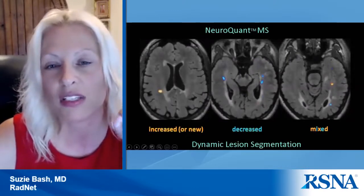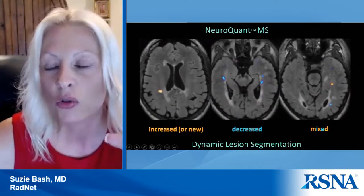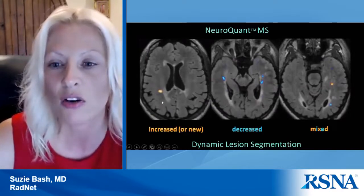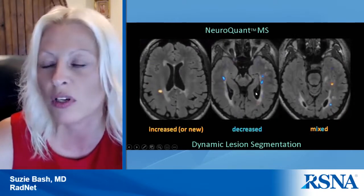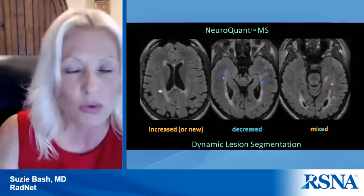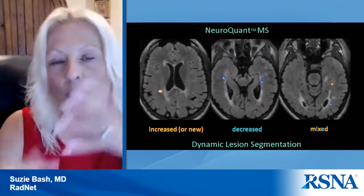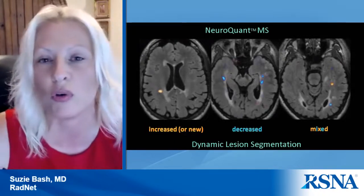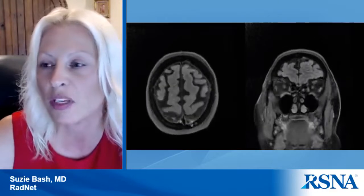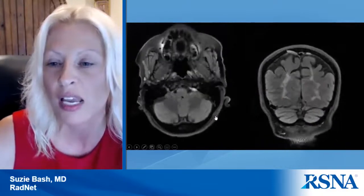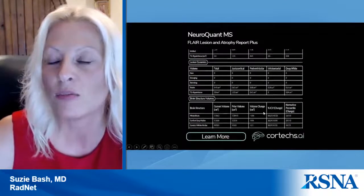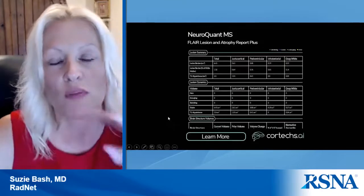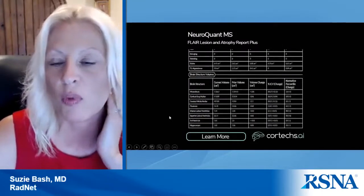It also importantly allows dynamic lesion segmentation, where plaques that are increased in size or new are displayed in orange, and decreasing lesions in blue. This is very helpful when you have hundreds of plaques — the software jumps out in a color-coded manner to show which ones are new and which ones are improving. On your PACS station you would see new or increasing plaques in orange and decreasing plaques in blue. There are different reports available and I'd like to familiarize people with what some of these quantitative volumetric reports look like.